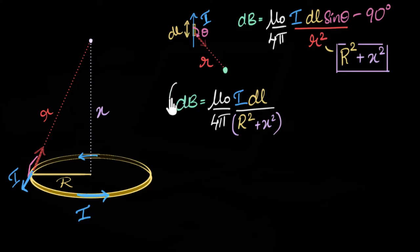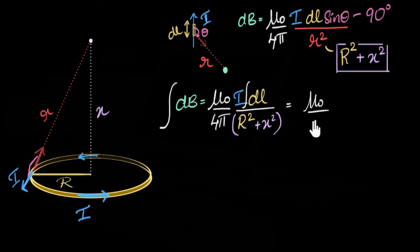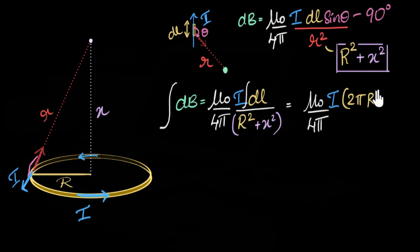So if I take the integral, all these things are constants that come out of the integral, and the only thing I'll effectively be integrating is dL. So I end up with mu-naught over four pi, times I, times the integral of dL. The integral of dL is the total length of the wire, which is the circumference of the circle: 2πr. So that gives mu-naught over four pi times I times 2πr divided by R² + x². But wait — I'm not done. There's something I haven't taken care of.